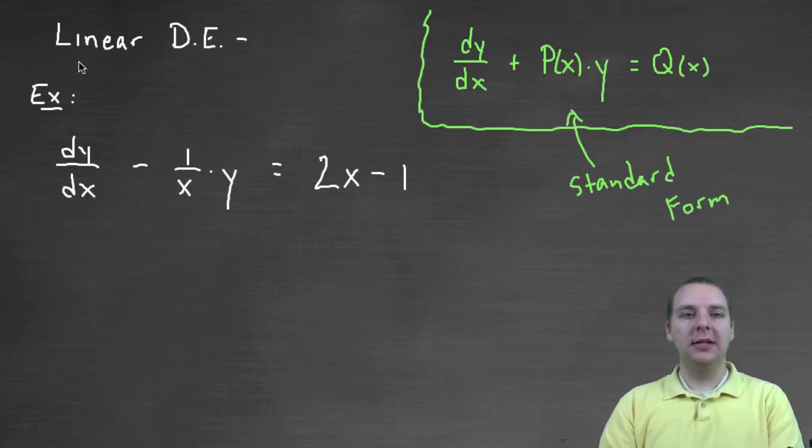Some important things to look out for when you're trying to write this as a linear differential equation is the coefficient of dy/dx should be one. And so if you have like five dy/dx or x dy/dx, what you would do to fix that is you would divide both sides by that coefficient. It's a very common thing to have a coefficient in front of dy/dx that you have to get rid of.